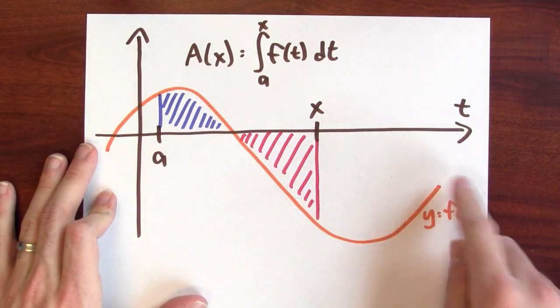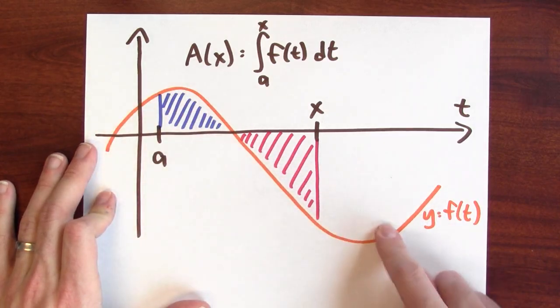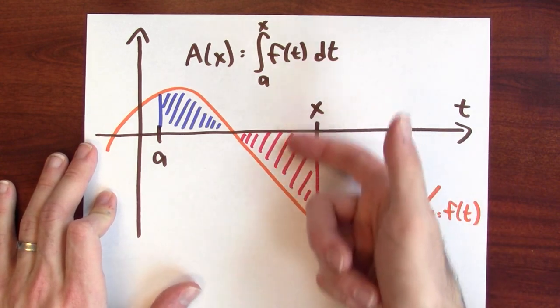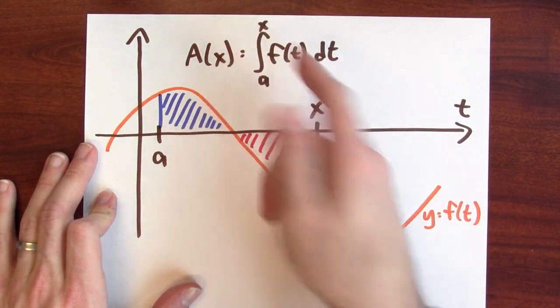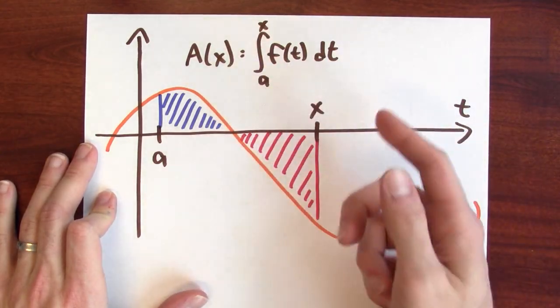So here's an example where the function that I'm graphing, y equals f of t, passes below the t-axis. And when the graph is below and I'm calculating the integral, this area here counts as negative in the integral.